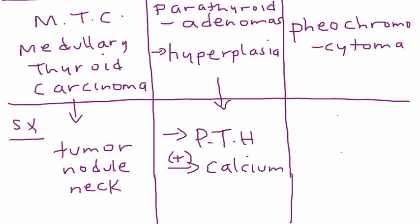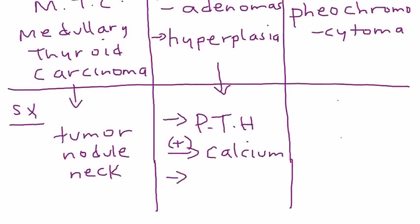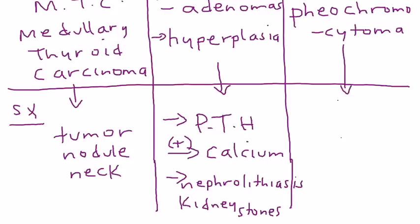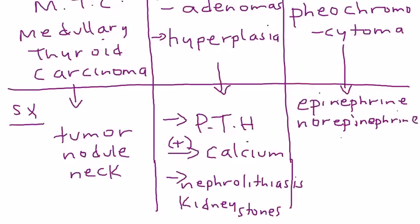Increased calcium in the bloodstream leads to hypercalcemia, which can cause kidney stones as calcium deposits in the kidney — also known as nephrolithiasis. Finally, the pheochromocytoma produces catecholamines — epinephrine and norepinephrine — which cause a strong sympathetic nervous system response, most importantly vasoconstriction.